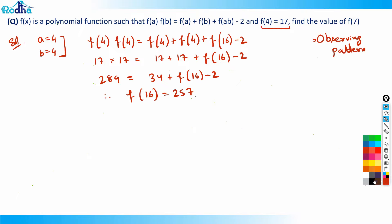I got f(4) = 17 and f(16) = 257. This should be good enough to observe the pattern. If f(4) is 17, it's 4² + 1. And 257 is 16² + 1, because 16² is 256 plus 1 is 257.